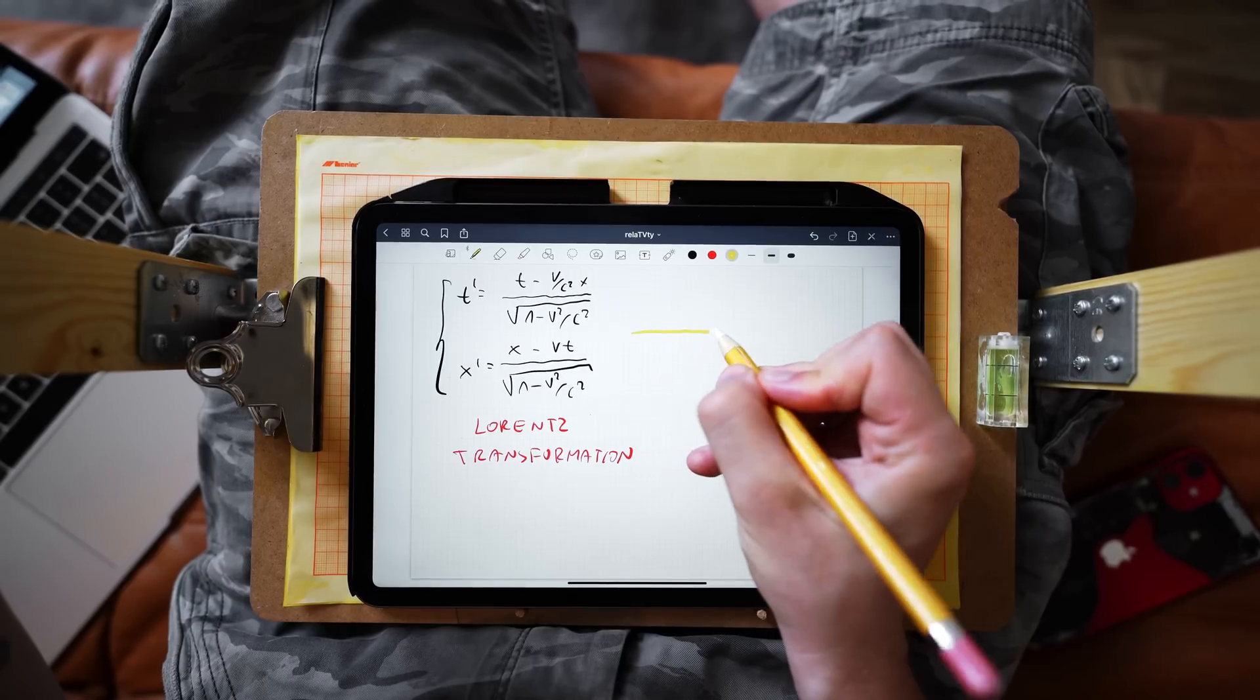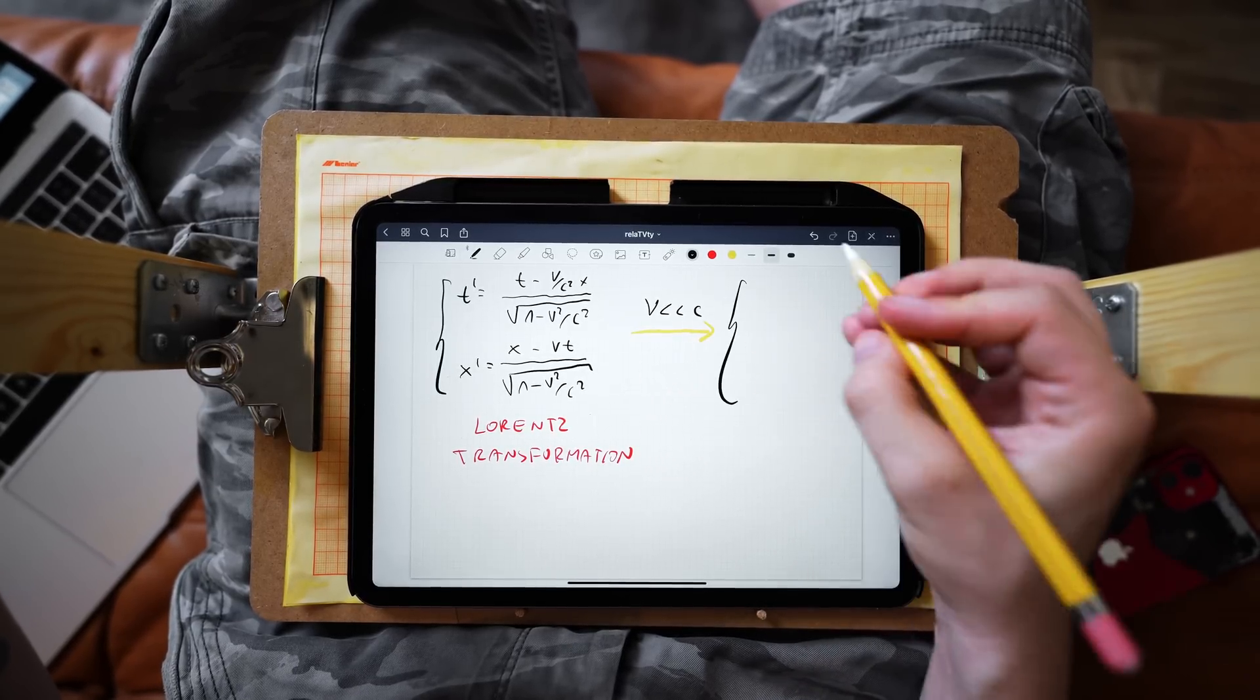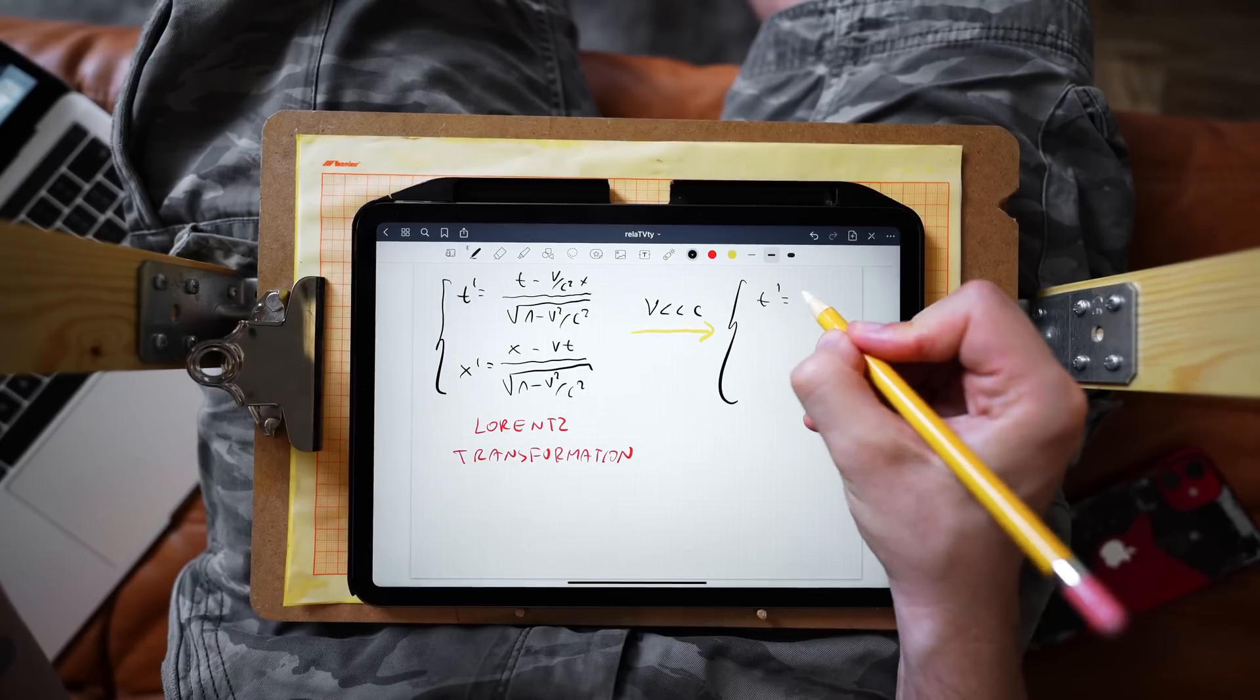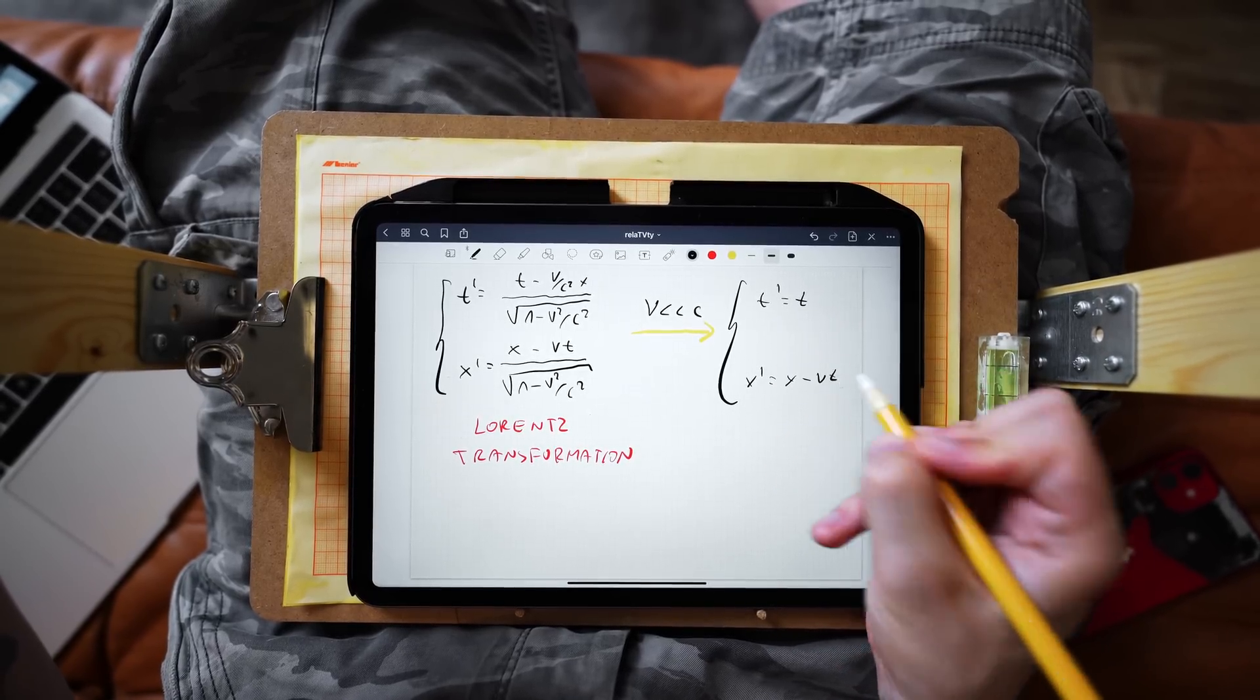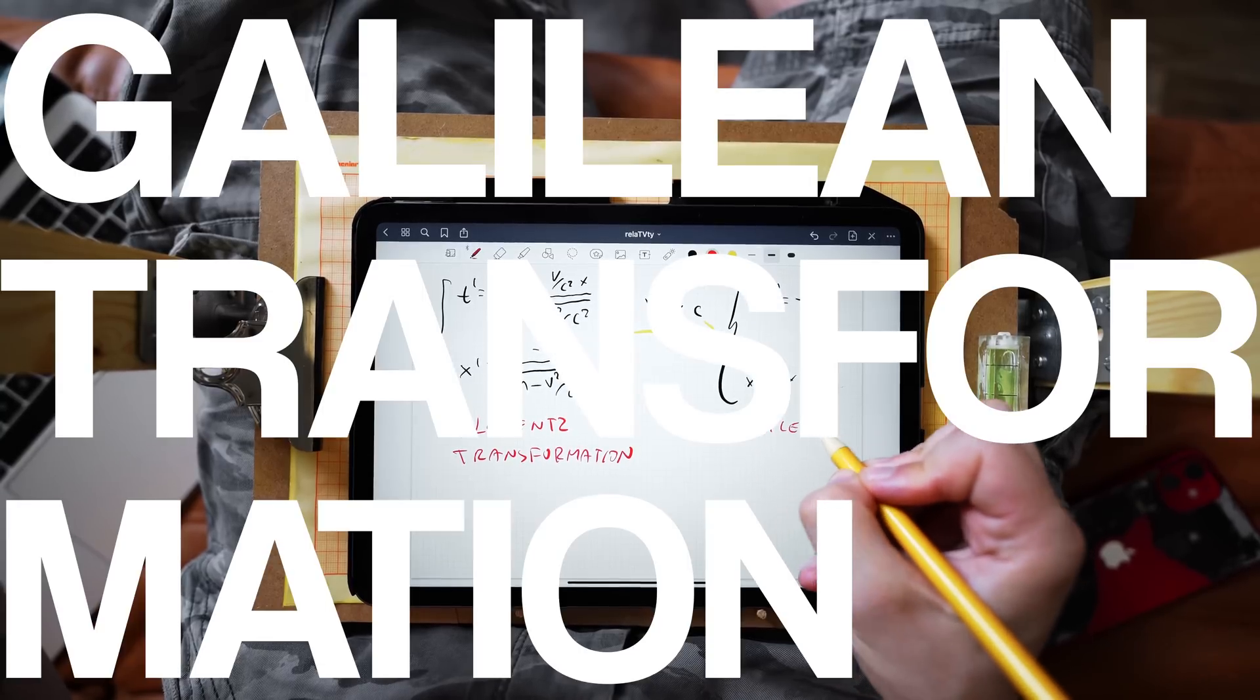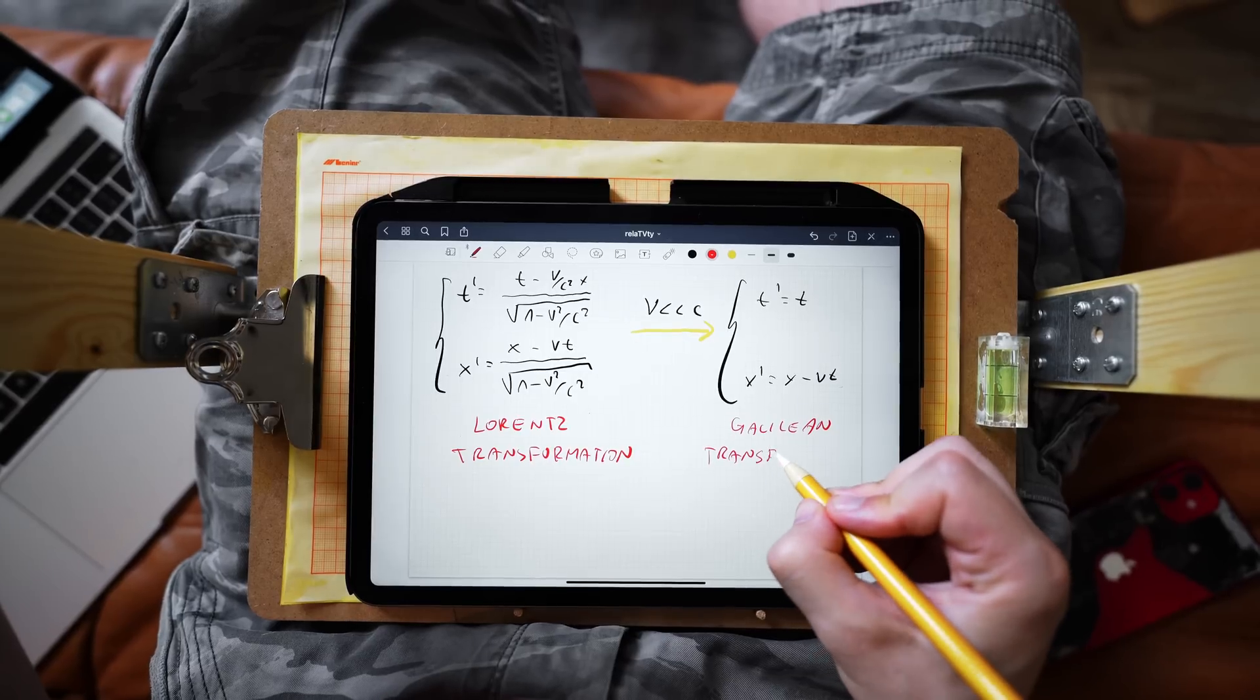Now let's have a look at the Lorentz transformation formulas and see how they behave when we take the limit of v that is much smaller than c. In that case, we can actually neglect v squared over c squared in the denominator. And what we get is just the regular Galilean transformations, in which time does not change and motion is just change of position in time.